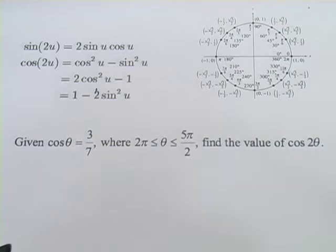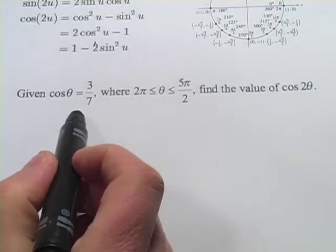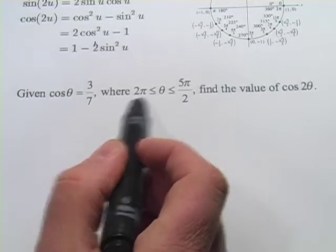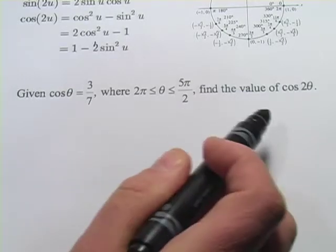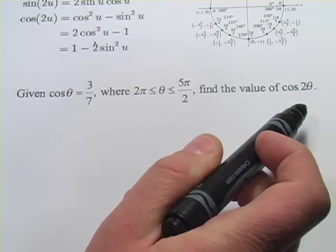So let's give it a try. This first one gives us the cosine of theta as 3/7 and we're between 2π and 5π/2. We want to find the value of the double angle, the cosine of 2 times theta.